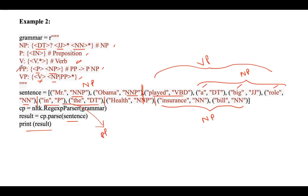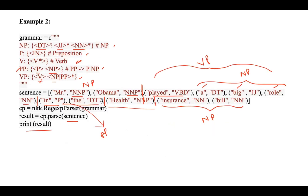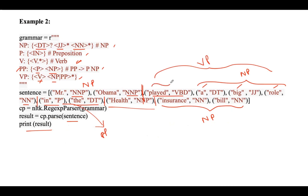According to rule 4 we have another noun phrase, 'health' as an NNP is a separate node, and the last one is a noun phrase for 'insurance bill'. In total we have six nodes: noun phrase (Mr. Obama), verb phrase, noun phrase (a big role), prepositional phrase (in the), NNP (health), and noun phrase (insurance bill).